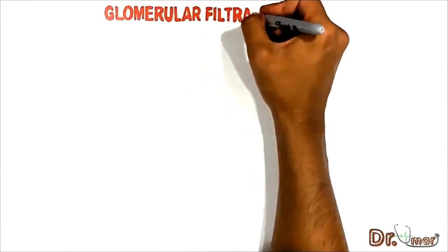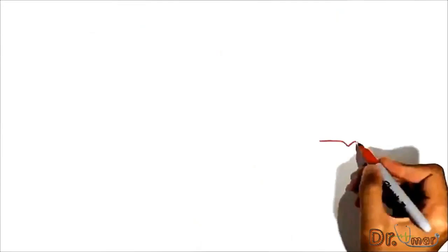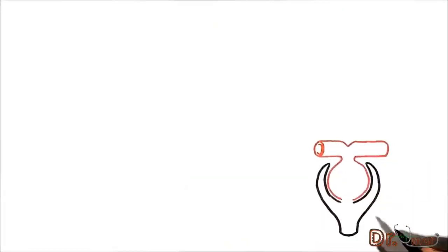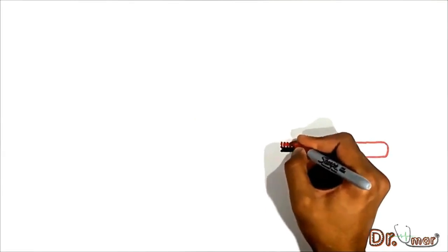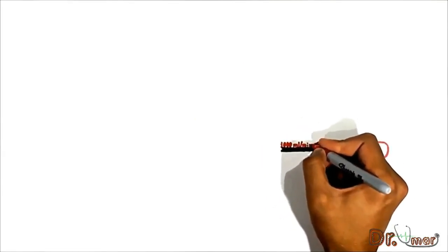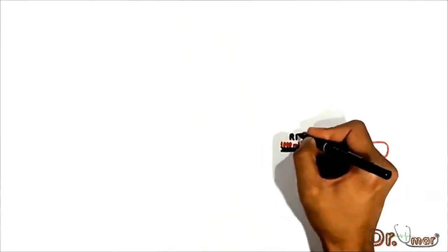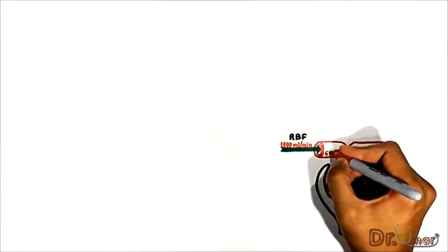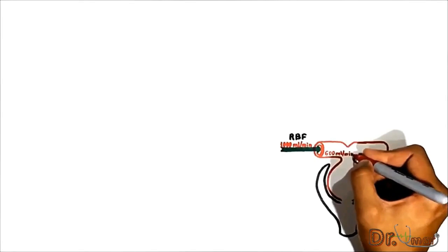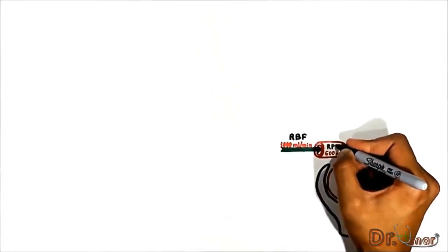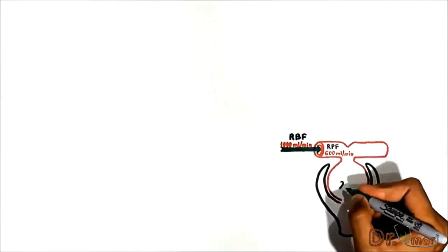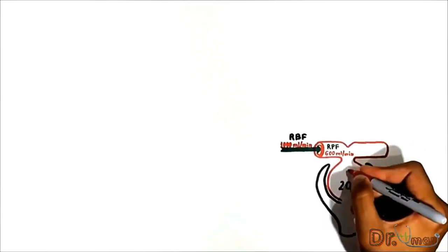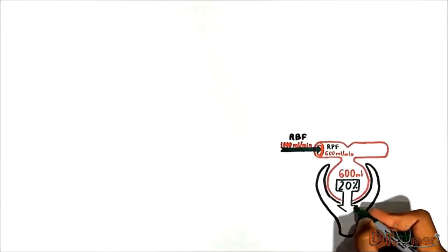In this video we will talk about glomerular filtration. The blood flow to both kidneys is 1000 mls per minute, which is referred to as renal blood flow. 60% or 600 mls from this liter of blood is plasma, and this is considered as renal plasma flow.